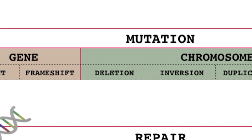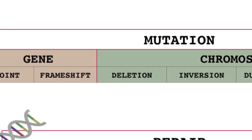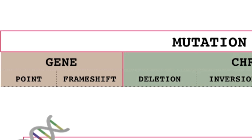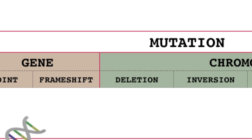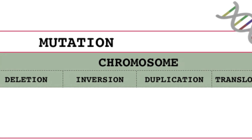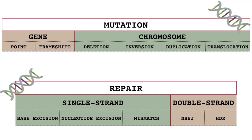To summarize, we distinguish gene mutations and chromosomal mutations. The gene mutation of a single nucleotide is called point mutation, and in case the mutation causes changes in the reading frame of a gene, it is called a frameshift mutation. The chromosome mutation can lead to deleted sections, inverted sections, duplication of a section, or transfer of a section to another chromosome. The repair of DNA damage can involve one or both strands. Single-strand repair can include the removal of a base, a nucleotide, or a section of one strand. Double-strand repair can be performed with or without using another homologous DNA molecule as a template, giving us non-homologous end-joining or homology-directed repair.